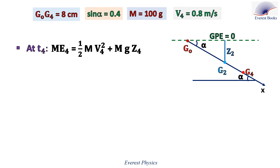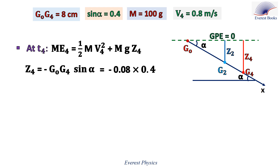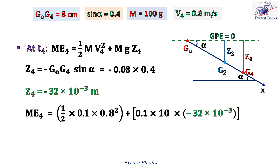Now, the mechanical energy at instant T4: ME4 equals ½MV4² plus MgZ4. Z4 equals minus G0G4 times sin(alpha). G0G4 equals 8 cm, which equals 0.08 meters, and sin(alpha) equals 0.4. Therefore, Z4 equals minus 32 times 10⁻³ meters. Replacing M, V4, g, and Z4 by their values gives ME4 equal to 0.